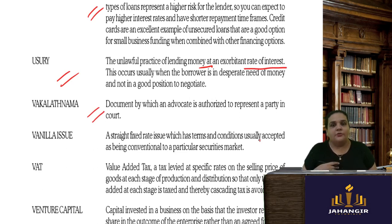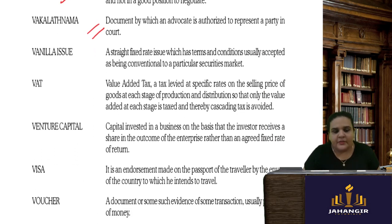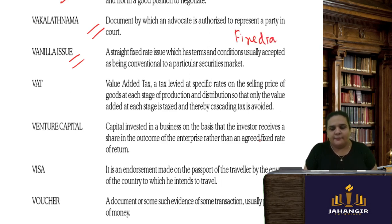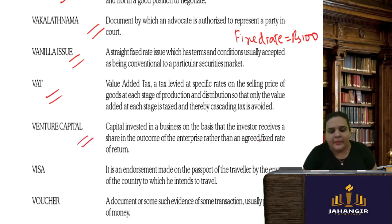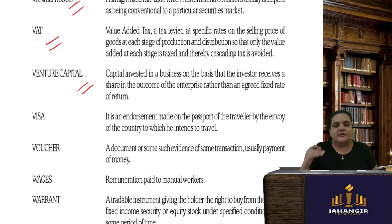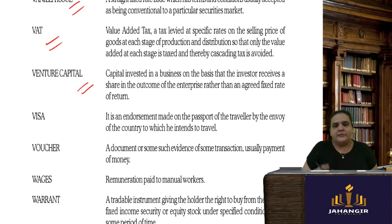Vakalat nama is a document by which an advocate is authorized to represent a party in court. Vanilla issue is a straight fixed-rate issue — a fixed rate given to securities, for example Rs. 100 per share, you apply at that price. Value added tax is VAT. Venture capital is capital invested in a business where the investor receives a share in the outcome of the enterprise — venture capitalists invest in new entrepreneurs and take a share of what is made.